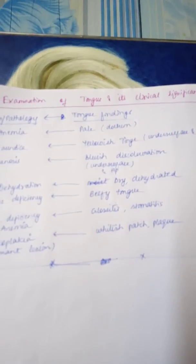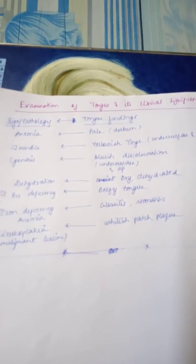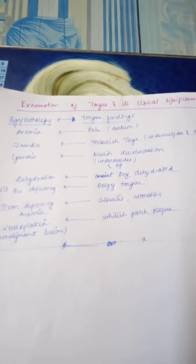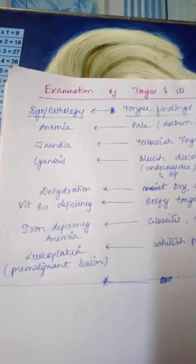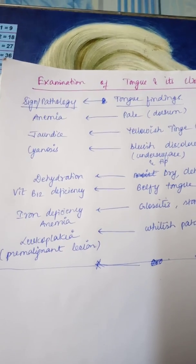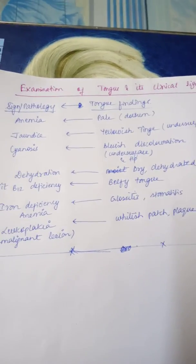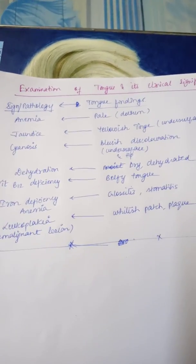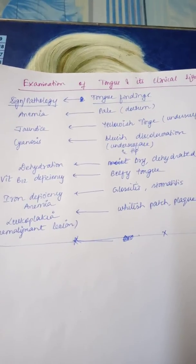If the tongue is pale, especially on the dorsum of the tongue, we can say the patient is anemic. Anemia is very common in India, especially iron deficiency anemia, so that's a common finding.